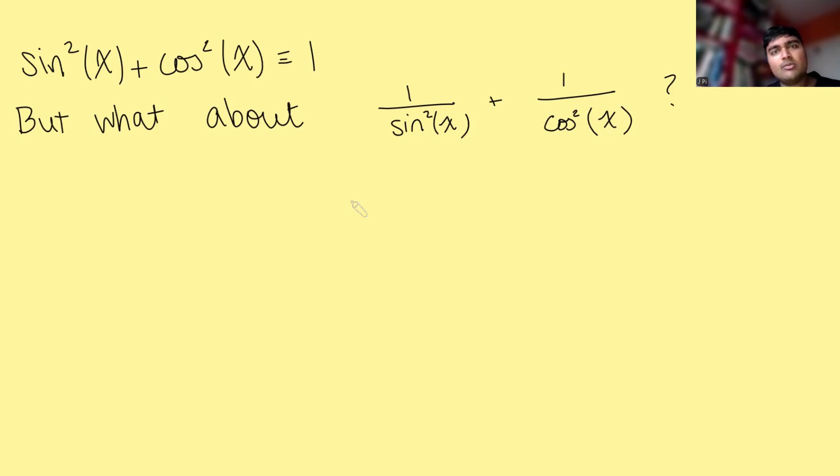And so therefore, 1 over sine squared x will be bigger than or equal to 1. So this will be bigger than or equal to 1, and for the same reason, this will be bigger than or equal to 1. So if I add them up, that would be at least 2.